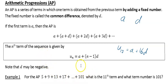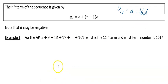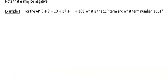A can be positive or negative, and D can be positive or negative. For this example, for the AP 5 + 9 + 13 + 17 + ... + 101: what is the 11th term, and what term number is 101?